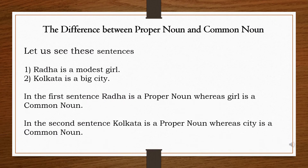We shall study the difference between proper noun and common noun, as there is always a confusion among students about the difference between both of them. See the sentence: 'Radha is a modest girl.' In this sentence, Radha is the name of the girl, so it is a proper noun. And the word 'girl' is used for all girls, so girl is a common noun.